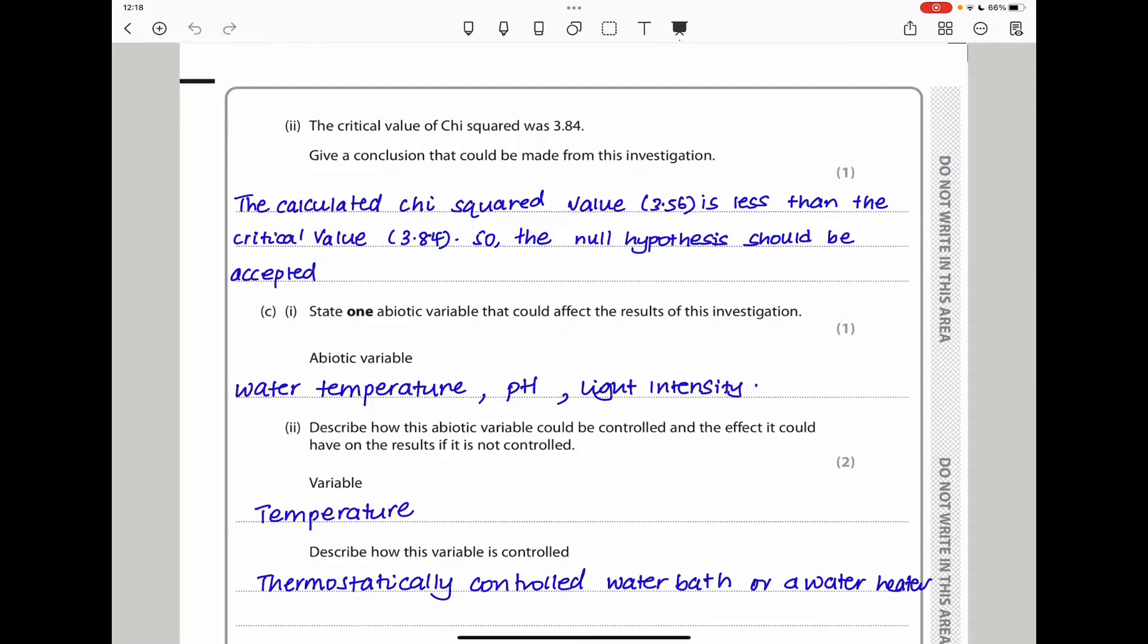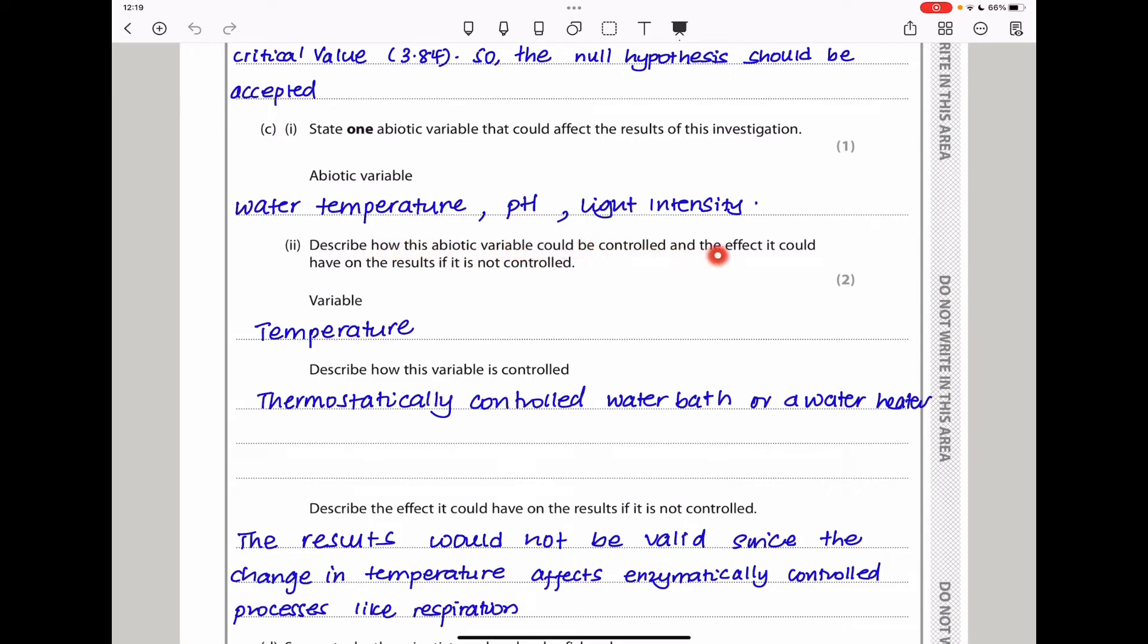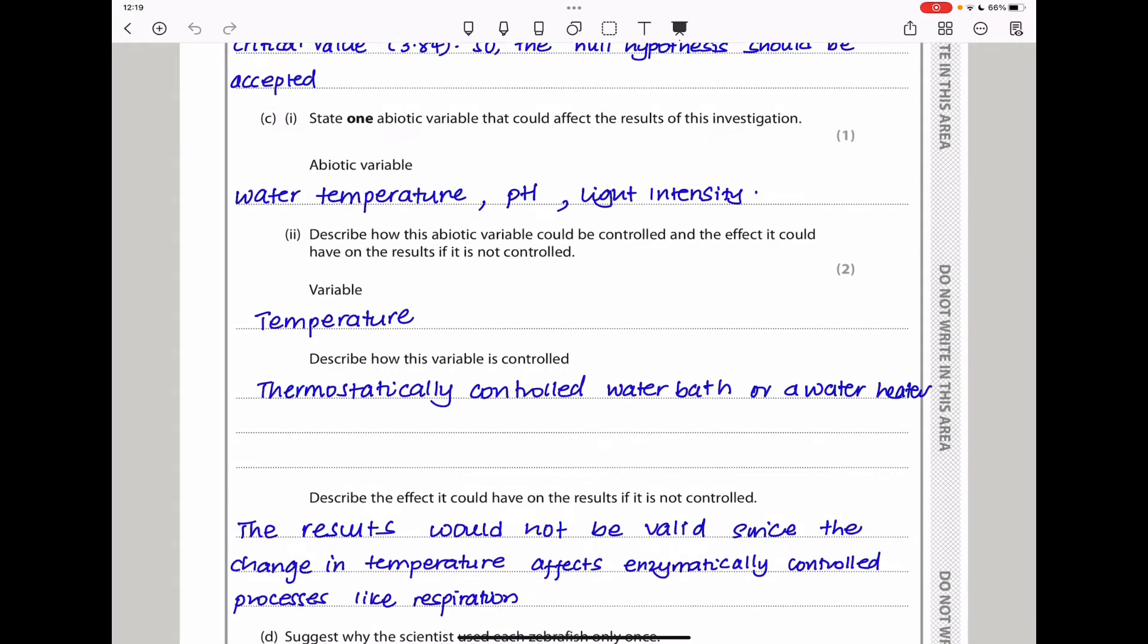Describe how the abiotic variable could be controlled and the effect it could have on the results if it's not controlled. I chose the variable of temperature. How could we control it? Using thermostatically controlled water bath or a water heater. If we heat the temperature of the water so that it's maintained, then the results are not going to be affected.